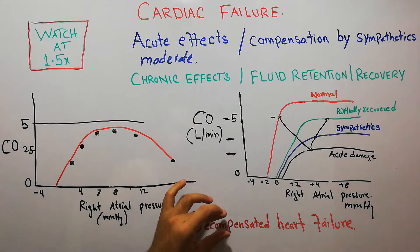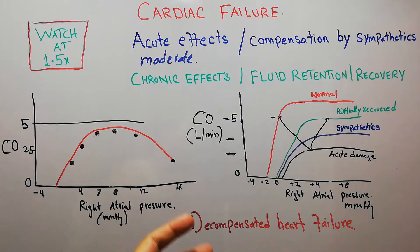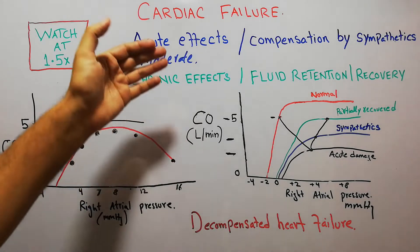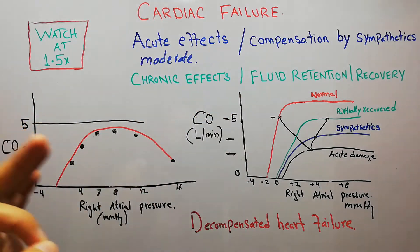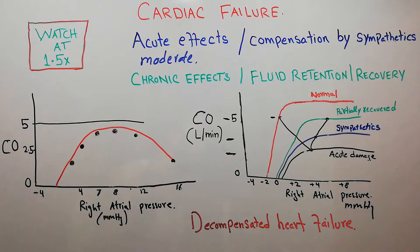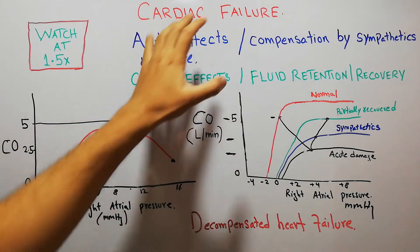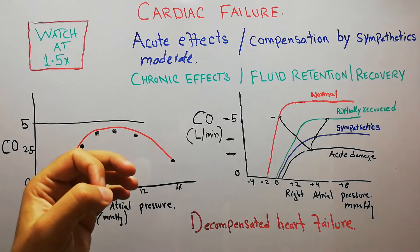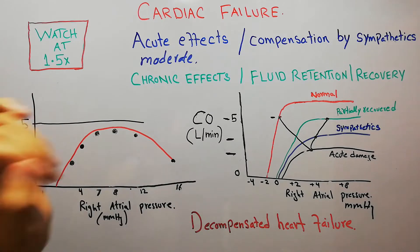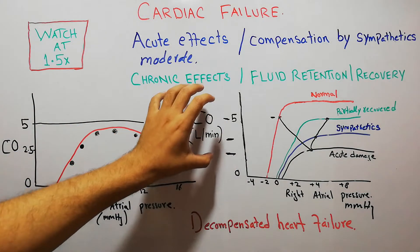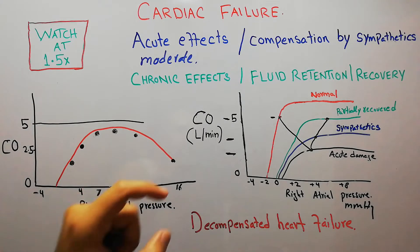To understand decompensated heart failure we must quickly revise compensated heart failure and the acute and chronic effects of heart failure, which we have discussed in detail in our last 2-3 lectures. Cardiac failure is the inability of the heart to pump enough blood to satisfy the needs of the human body. Normally, the cardiac output — the amount of blood the heart pumps every minute — is 5 liters per minute.